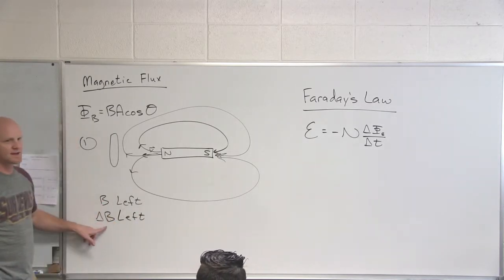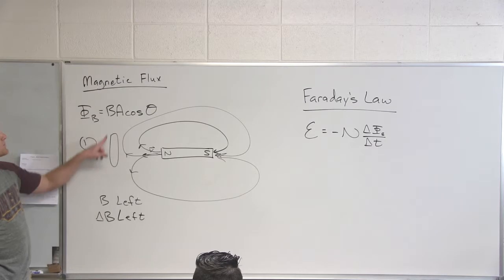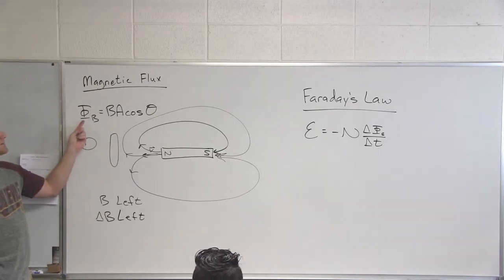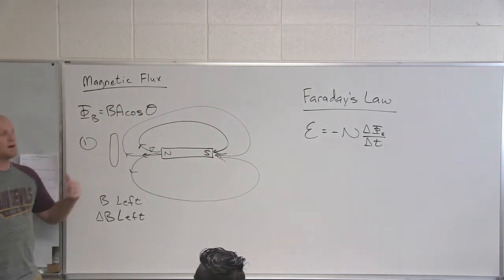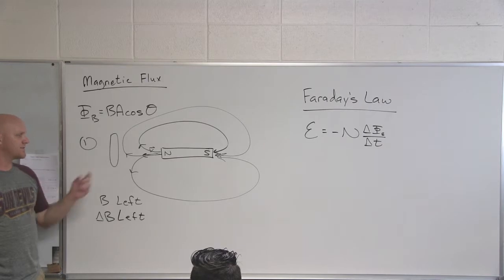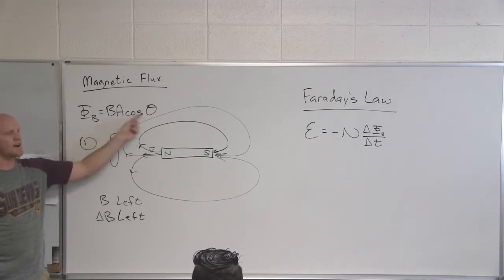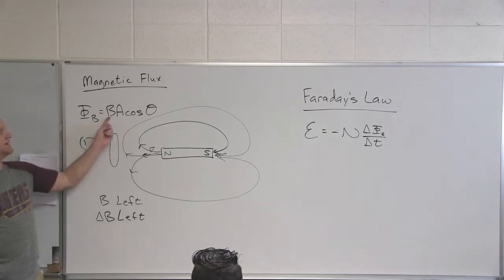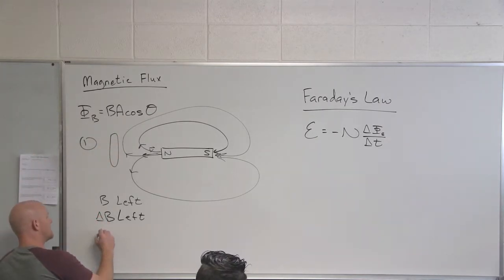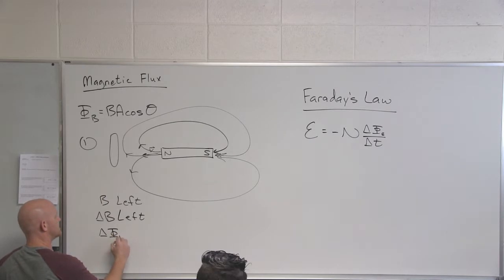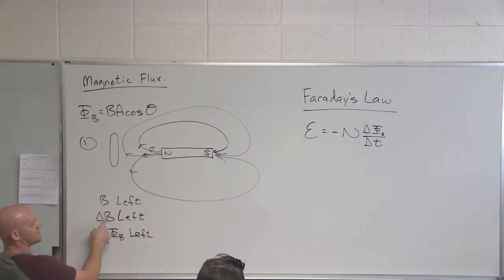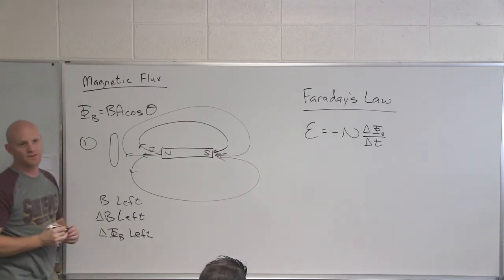I don't really care about the change in the magnetic field specifically — what I really want is the change in the magnetic flux. Magnetic flux is B·A·cosine(θ), and as long as it's changing in one of those three ways, we'll induce an EMF in our loop. In this case, B is changing. Since the change in B is to the left, the change in your flux is also to the left.